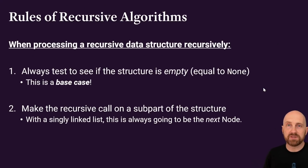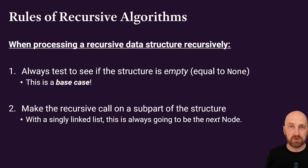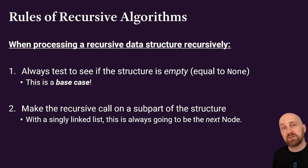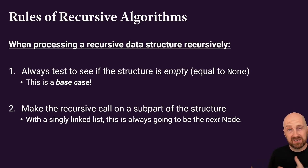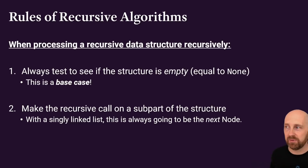There are some rules to think about when writing algorithms to process a data structure. We always want to test: if the structure is empty, we've reached our base case and have no more nodes to process. Otherwise, process the current node and then recursively process the rest of the structure. For a singly linked list, the recursive call processes the next node. For a tree, you'd apply it to both the left side and the right side.